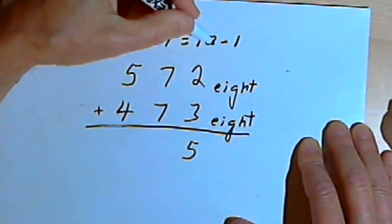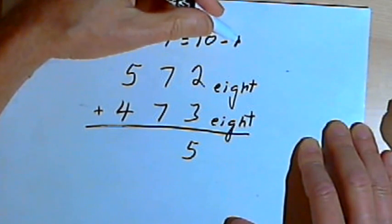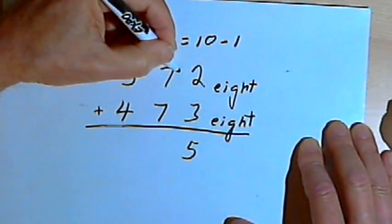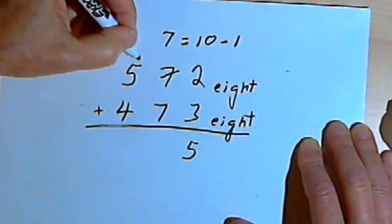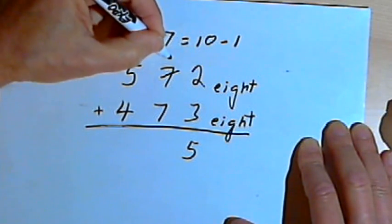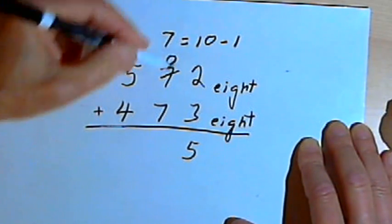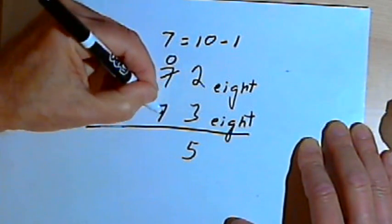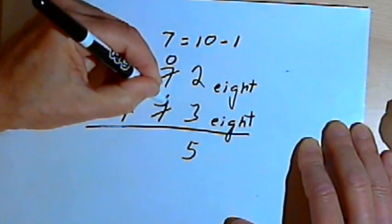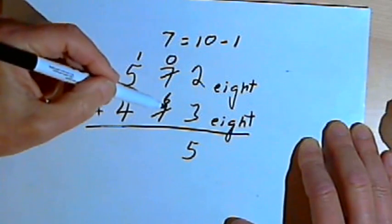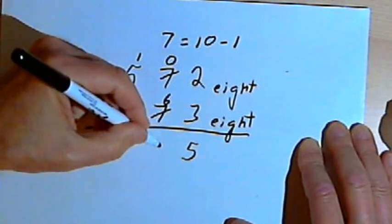Okay, so 7 equals 10 minus 1. So what I'm gonna do is I'm gonna cross out one of these 7s, and I'm gonna write 10 instead. I'll write the 1 over in the next column, and the 0 over where I've crossed out the 7. But I need that minus 1 part, so I'm gonna cross out the other 7, and I'll call that a 6, which is 1 less than 7. Now all I've got to do is add 6 and 0. Well, that's 6.